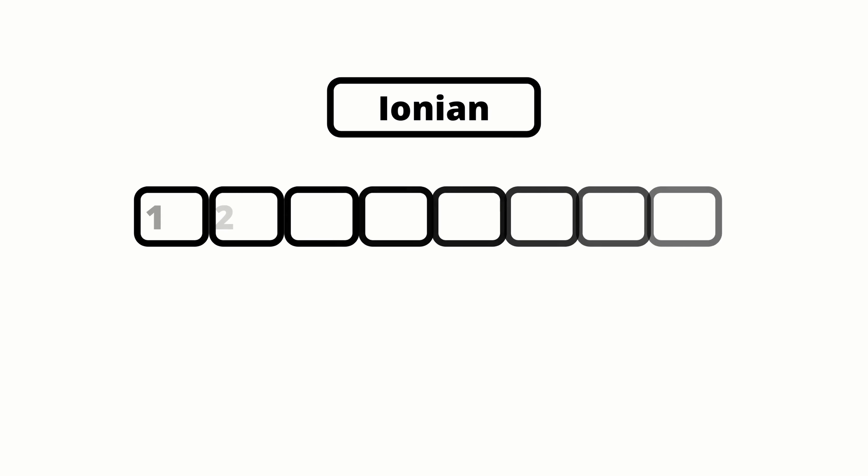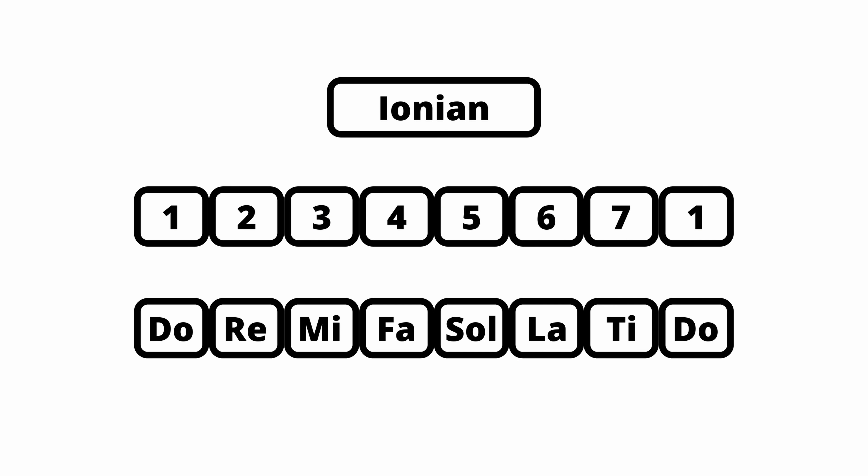First we're going to take a look at the Ionian mode, or major scale, since it's the one that's likely most secure in your mind. The formula for this scale is 1, 2, 3, 4, 5, 6, 7 and back to 1. In solfège, we sing it like this.